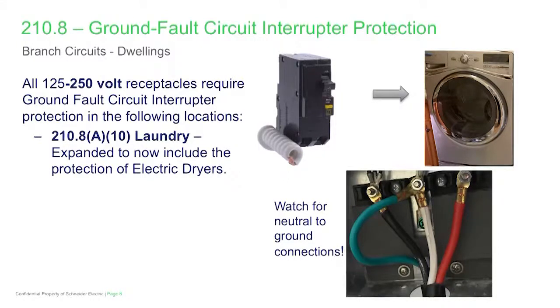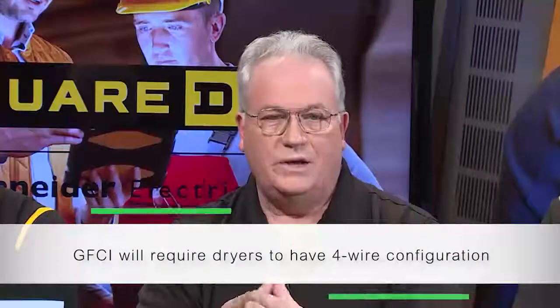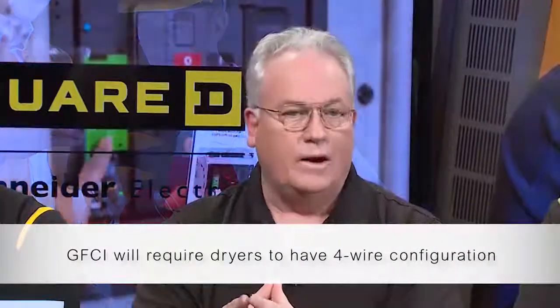Something to really watch for: GFCI kind of acts like a policing agent if you get a neutral-to-ground connection downstream of a service main bonding jumper. When appliances like dryers are sold at a retail outlet, they're typically sold without a cord. The cord can be purchased in a 3-wire or 4-wire configuration, but those appliances typically come with a neutral bonding strap already installed. So installers or owners are going to have to pay attention to that — if there's a GFCI ahead of that circuit, it's certainly going to let you know it's not wired correctly.